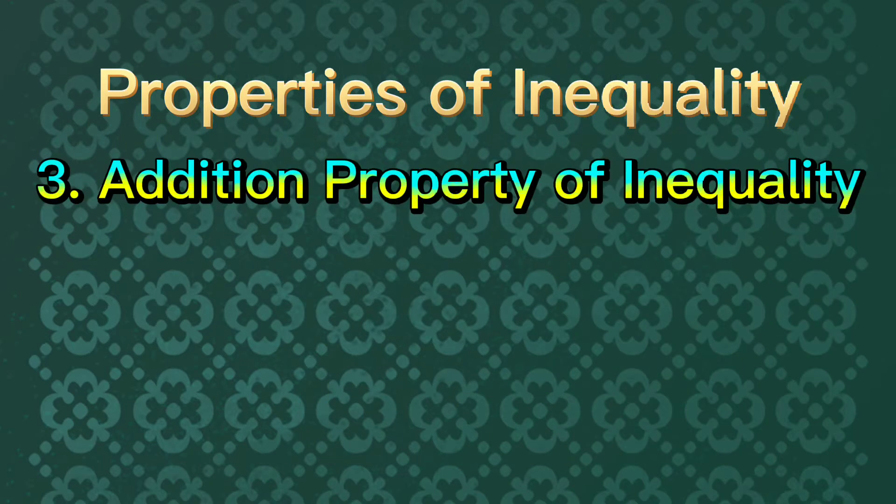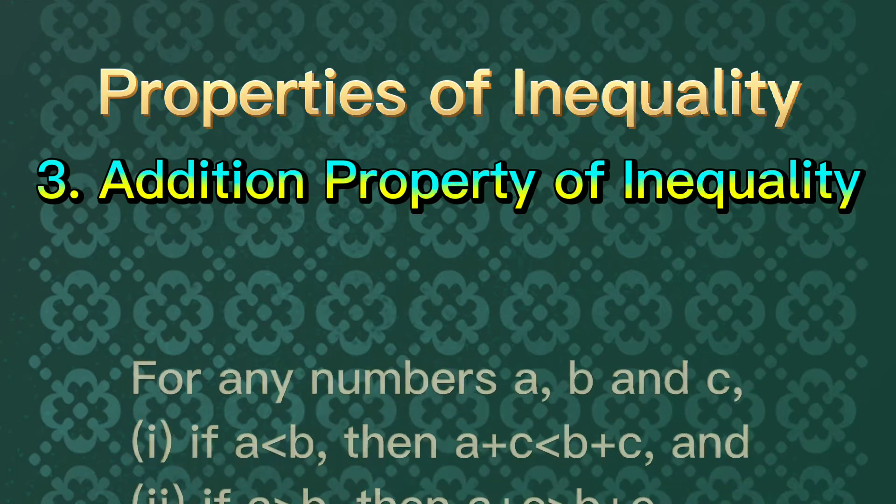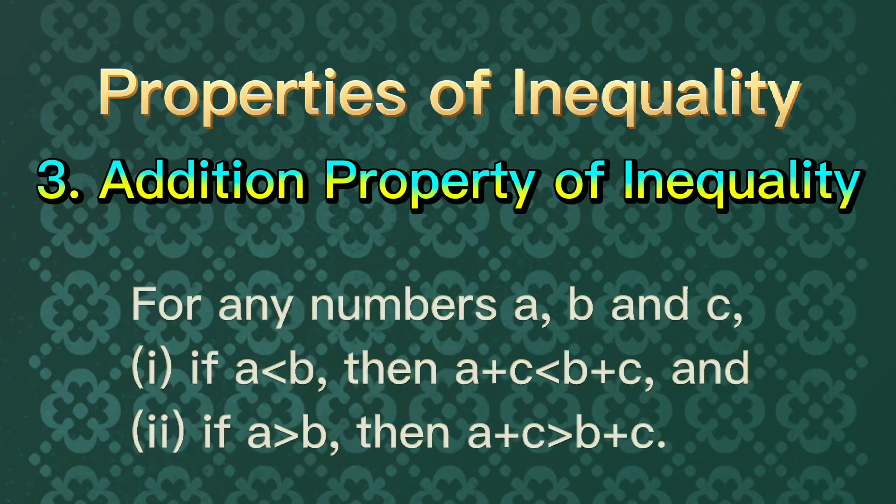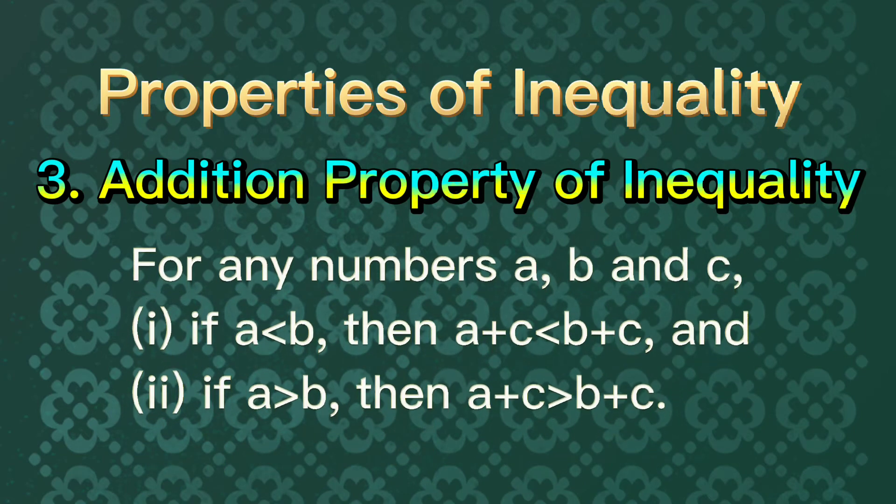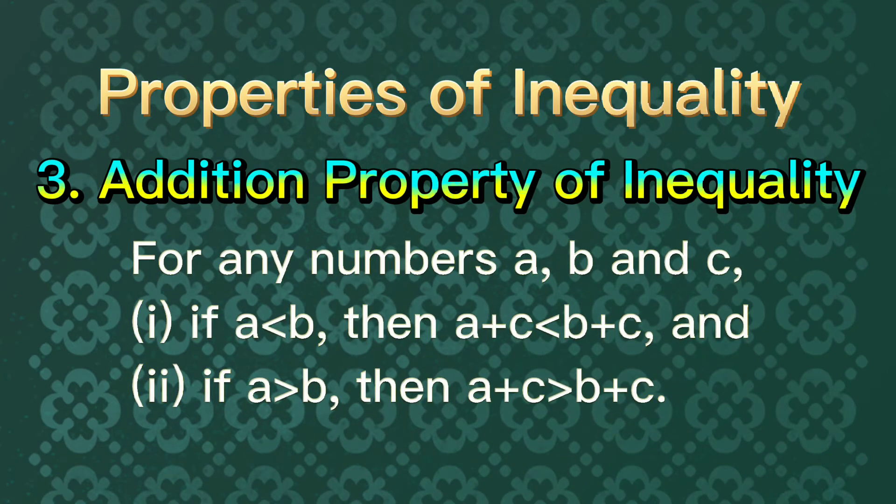The third property is called addition property of inequality, or API. For any numbers A, B, and C, if A is less than B, then A plus C is less than B plus C.